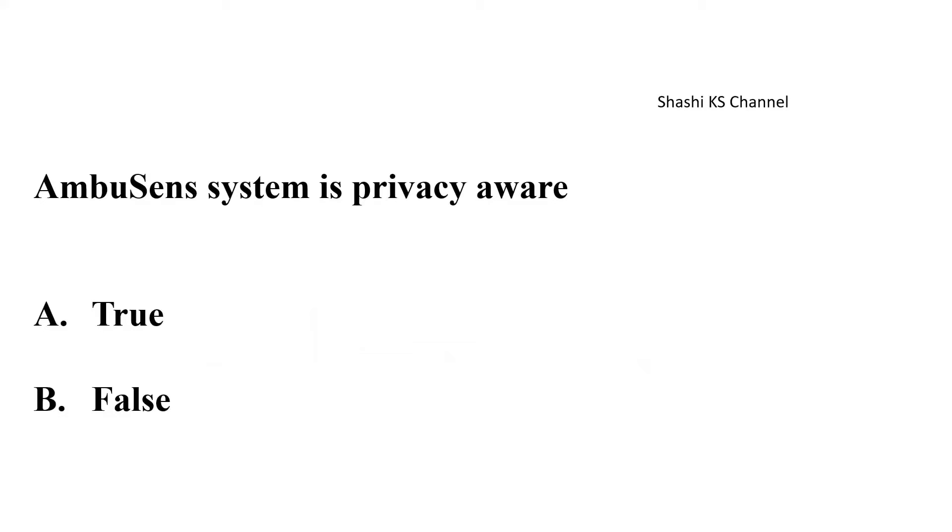Next question, Ambusense system is privacy aware. Is it true or false? The right answer to this is option A, true. Ambusense system is privacy aware. Ambusense is basically a health cloud framework and the developed system is strictly privacy aware. It basically involves patient identity masking by doing hashing and reverse hashing of the patient IDs. And it also has a scalable architecture. So Ambusense system is strictly privacy aware. So option A, true is the right answer.